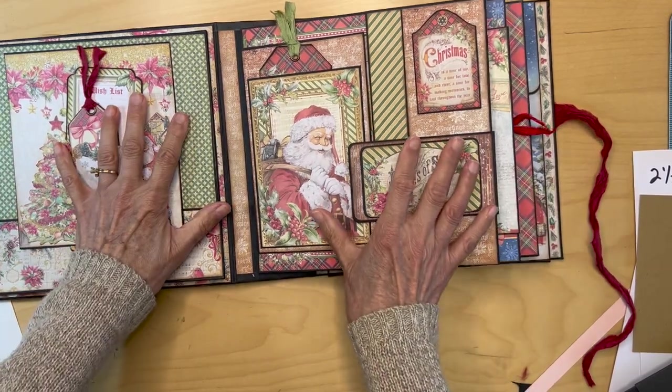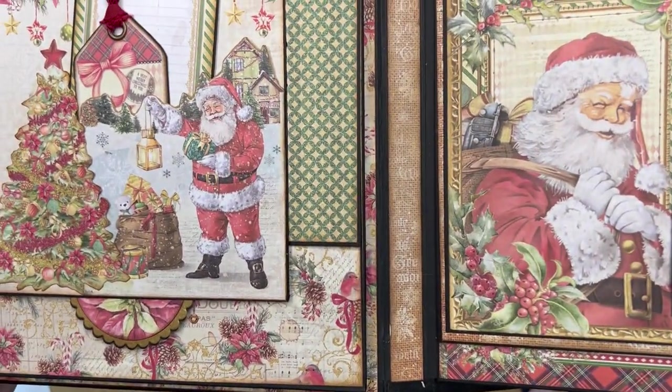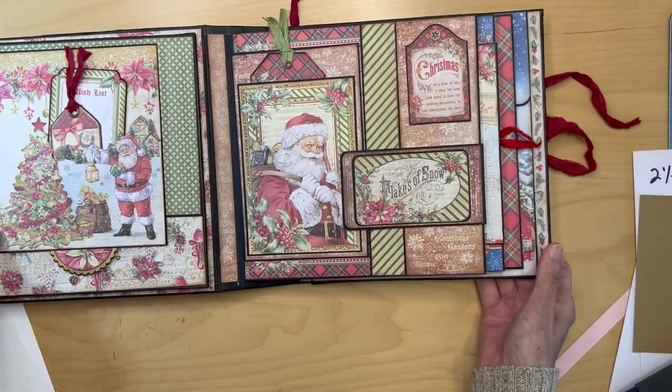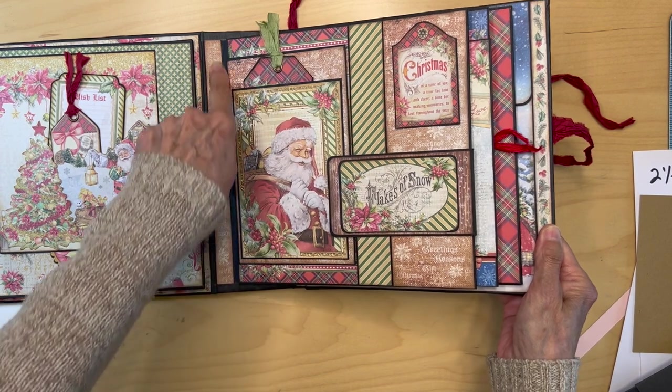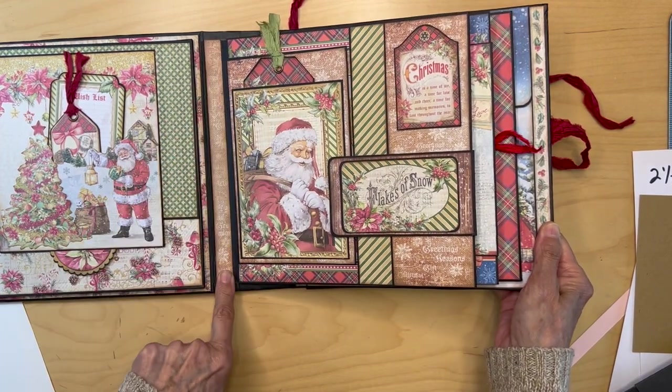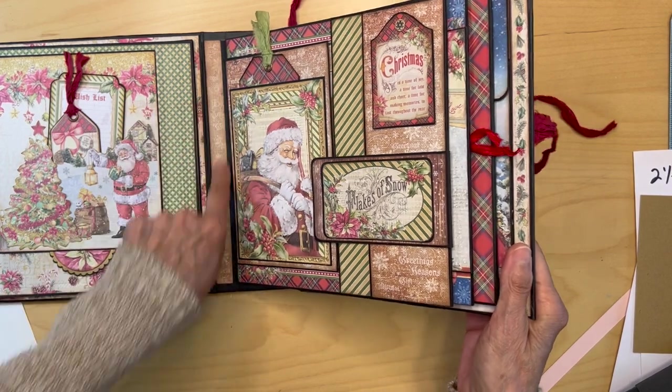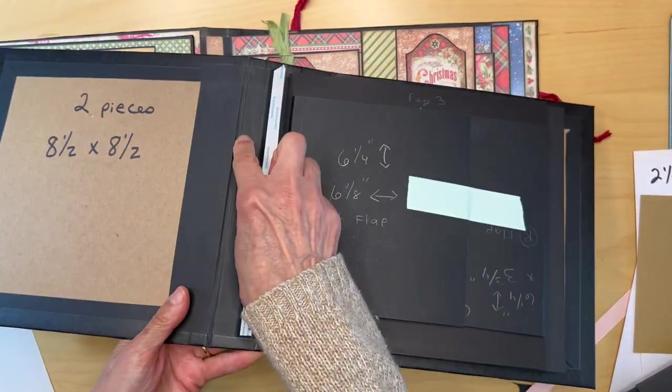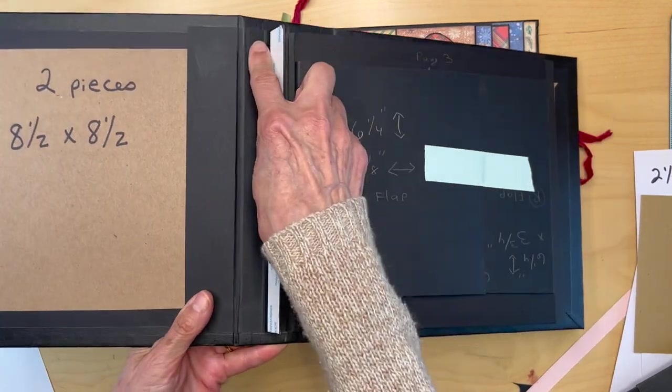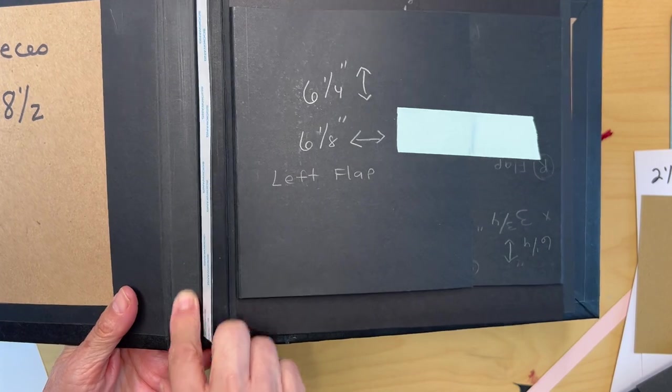Once all your pages are in, here's that first page you just put in. Once all your pages are in, you are going to have these gussets in between the pages. So this is that big gusset in between your first page and your album cover. Remember this was five eighths of an inch.